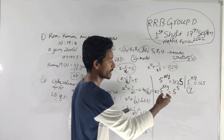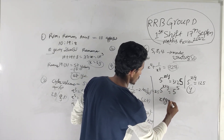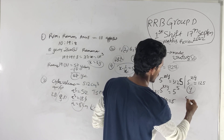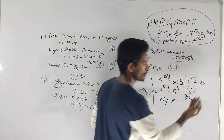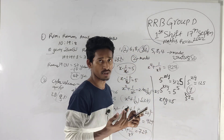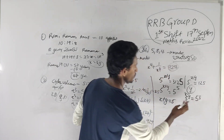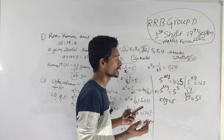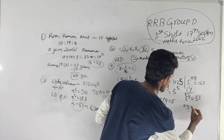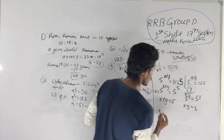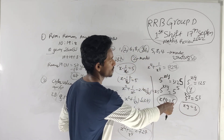If the bases are equal, then the exponents are equal. We have x plus y is equal to 5, and x minus y is equal to 3. These are two equations: x plus y and x minus y.